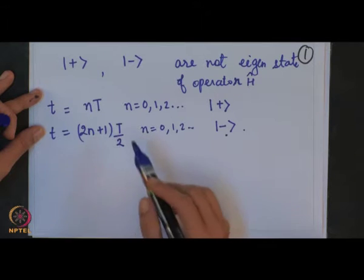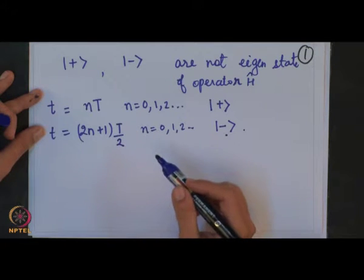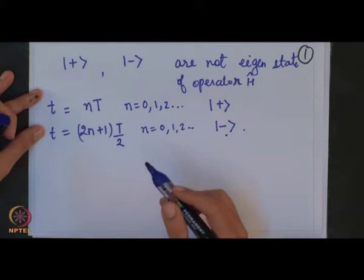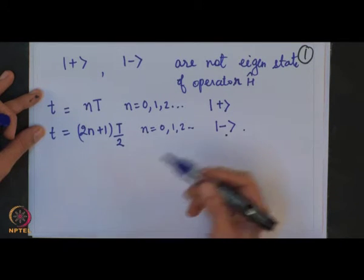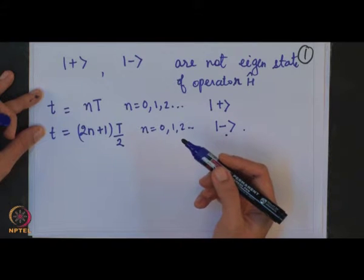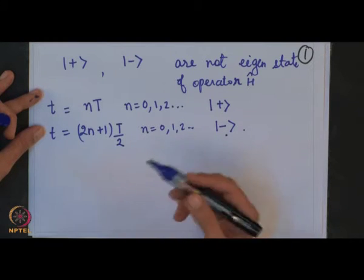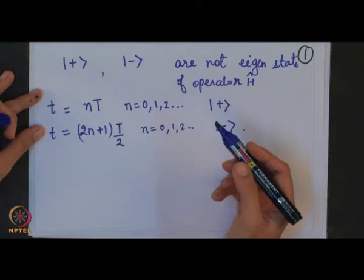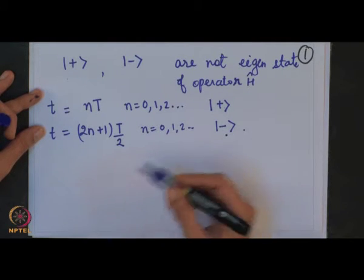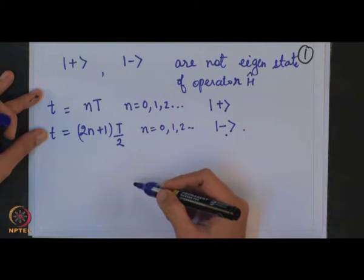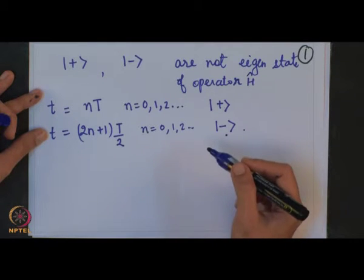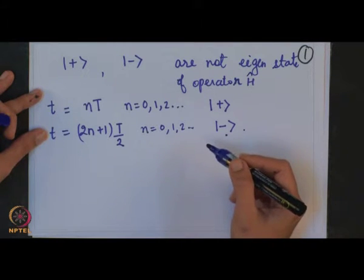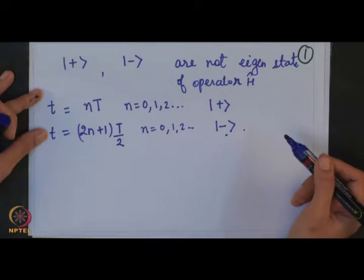You have to construct a one-parameter Hamiltonian which reproduces the above physics, and give a relation between the parameter and time T.